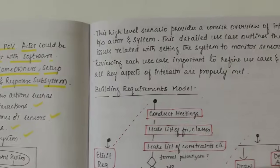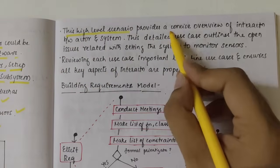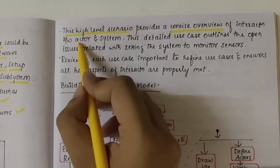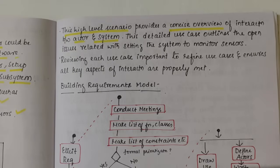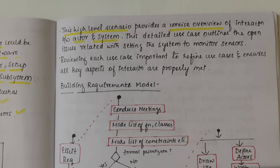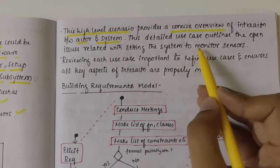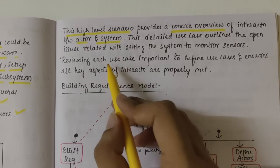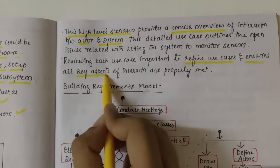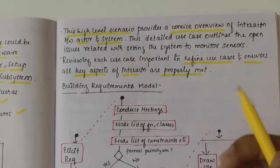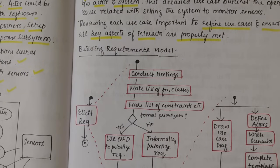This high-level scenario provides a concise overview of the interaction between system and actor, with both conditions — if/else — declared. This detailed use case outlines the open issues related to setting the system to monitor sensors. Reviewing each use case is important to refine them and ensure all key aspects of interaction are properly addressed. This was about the use case UML diagram.